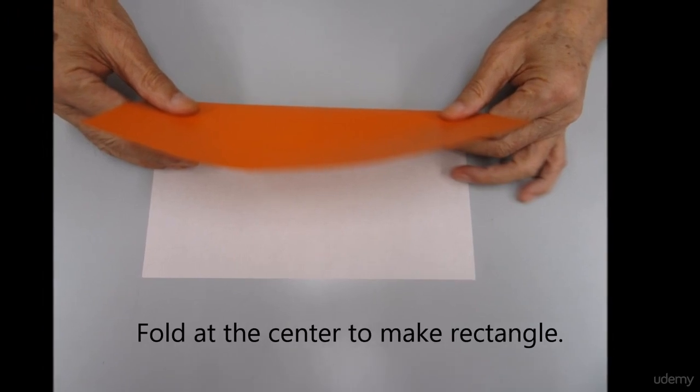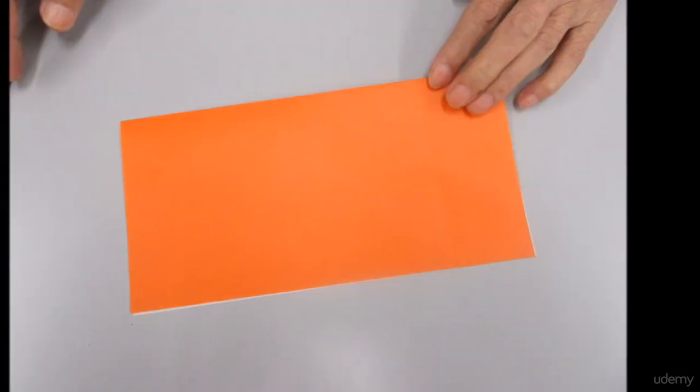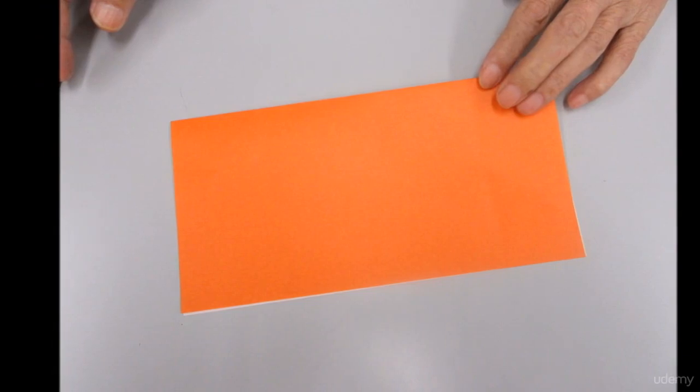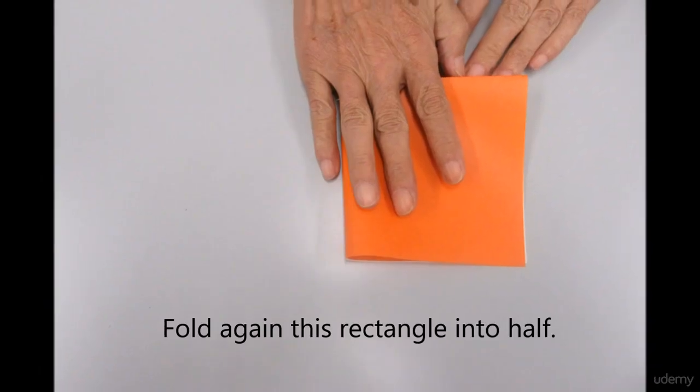Fold at the center to make a rectangle using mountain folding, and fold the rectangle in half again.